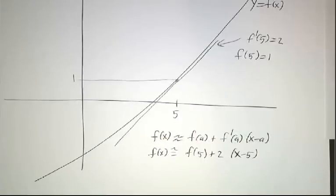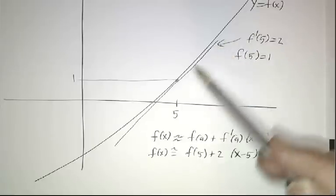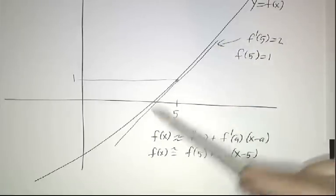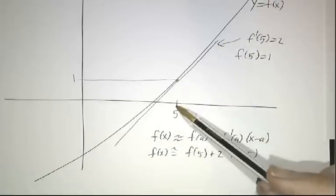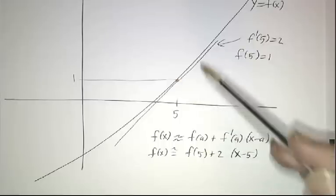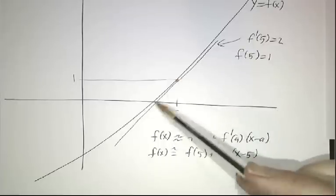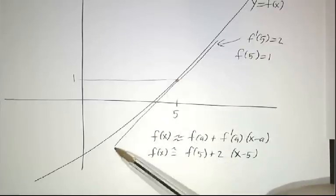And if I asked you, what is f when x equals 4? You'd say, it's climbing at a rate of 2. So if at 5 it's at 1, then at 6 it would be at 3. At 4 it would be at negative 1. At 3 it would be at negative 3.